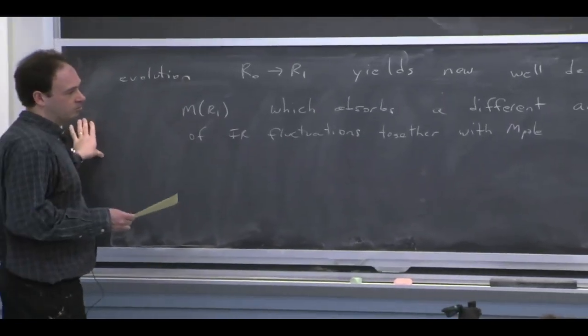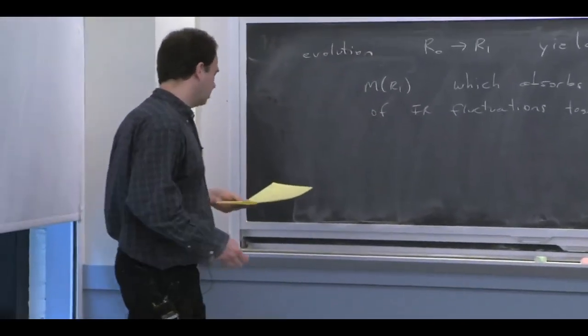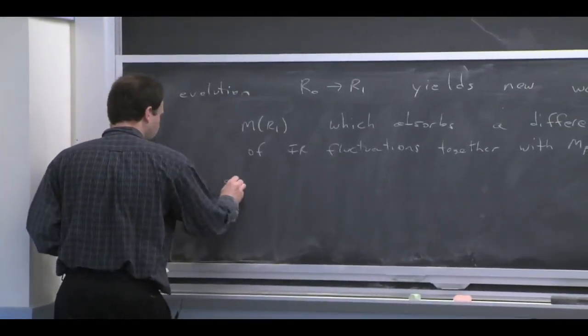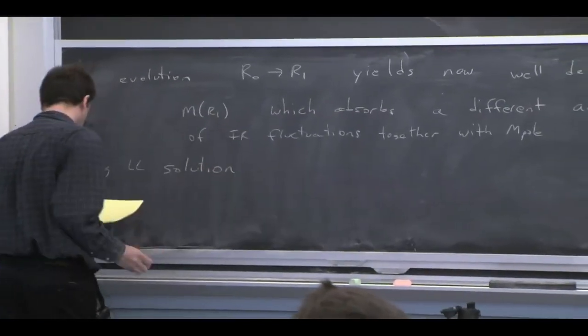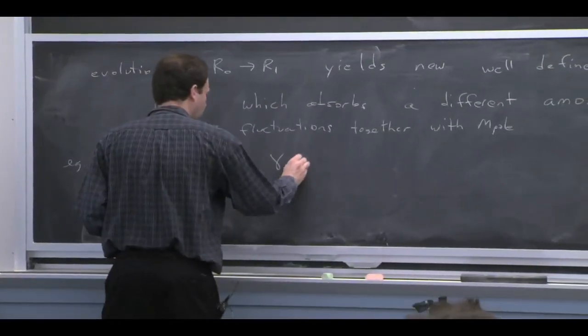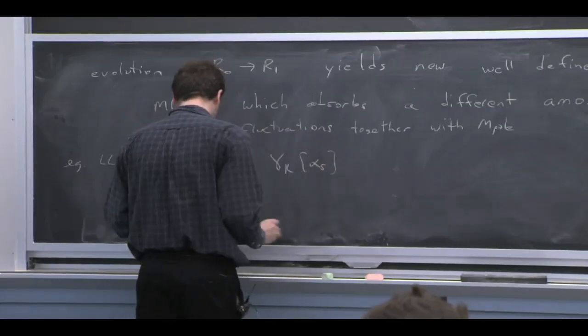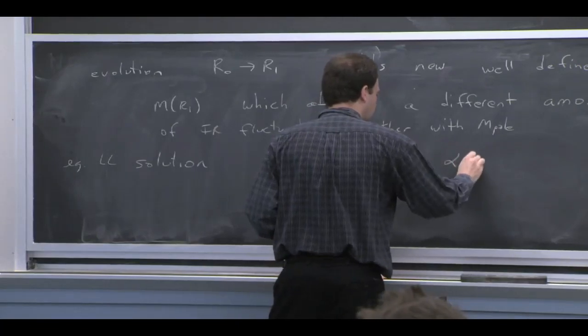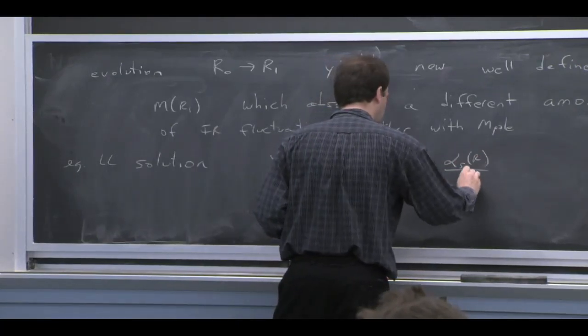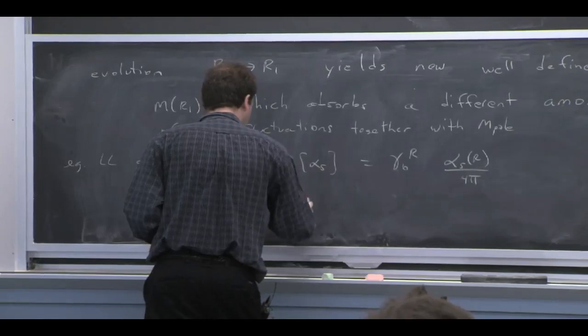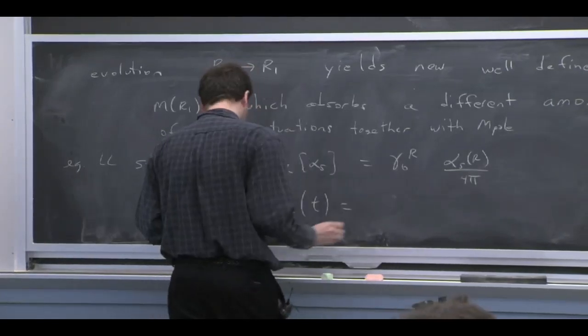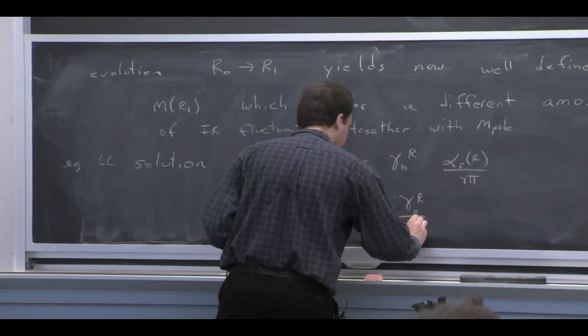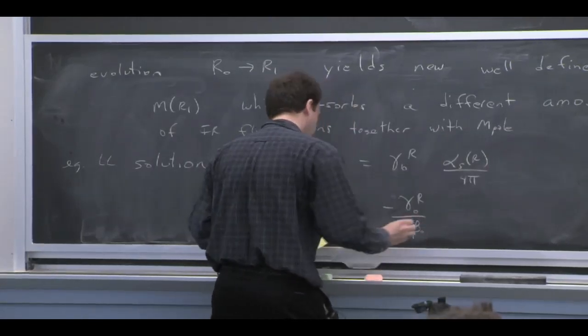So we could do that integral at whatever order we decide. Let's just do it at leading log. So at leading log, we take this guy, and we just take the first term, some constant, alpha over 4 pi. And so gamma R of T, switching variables, becomes constant over 2 beta 0, if we keep all the factors. And then a 1 over T, alpha becomes 1 over T.